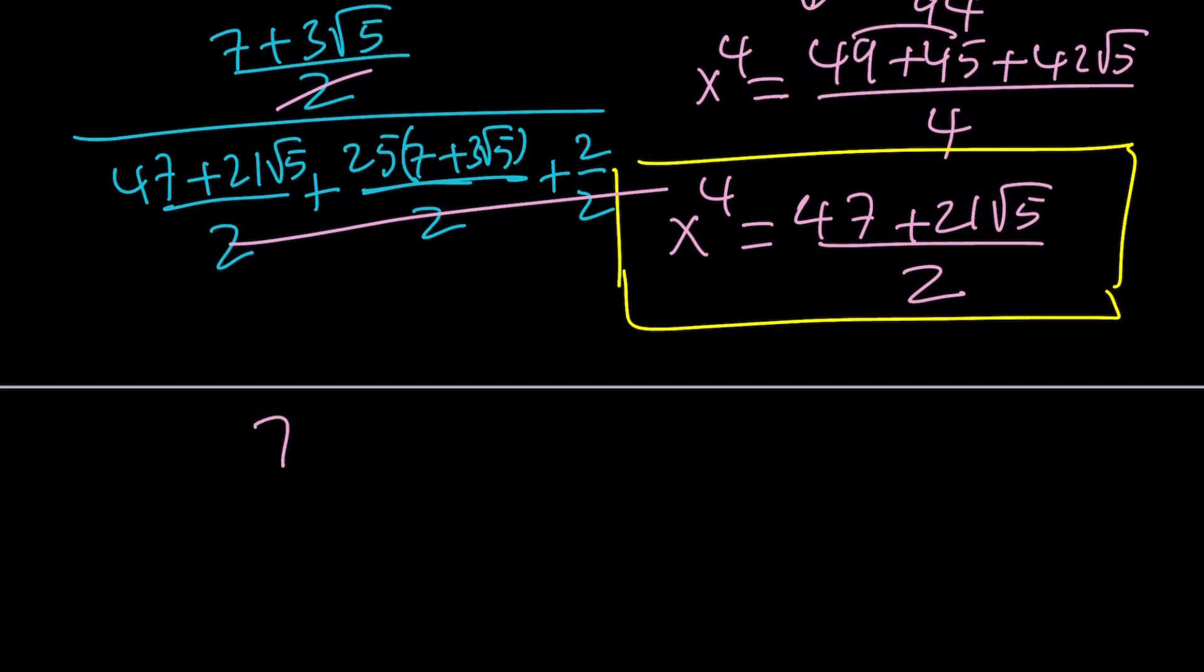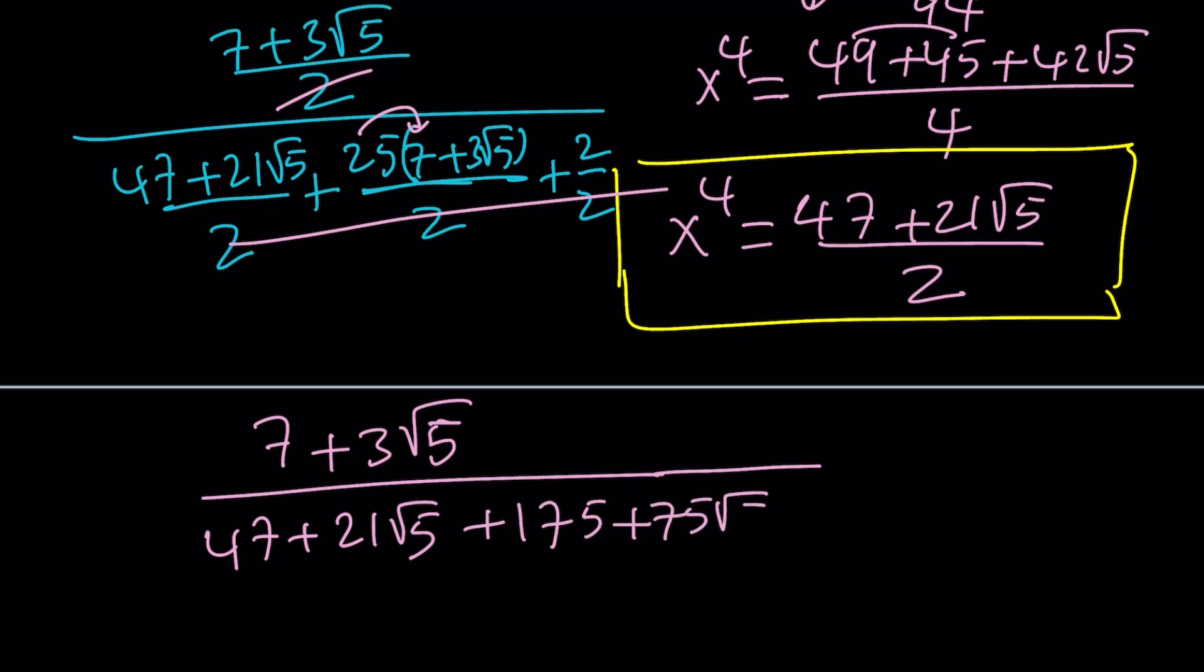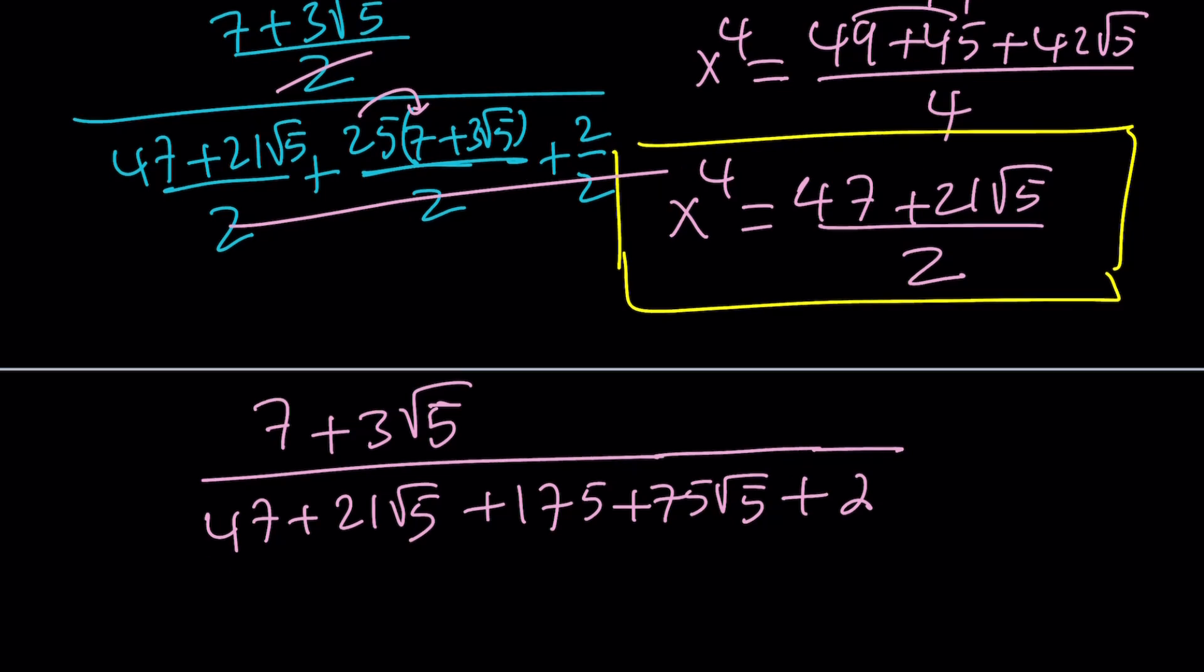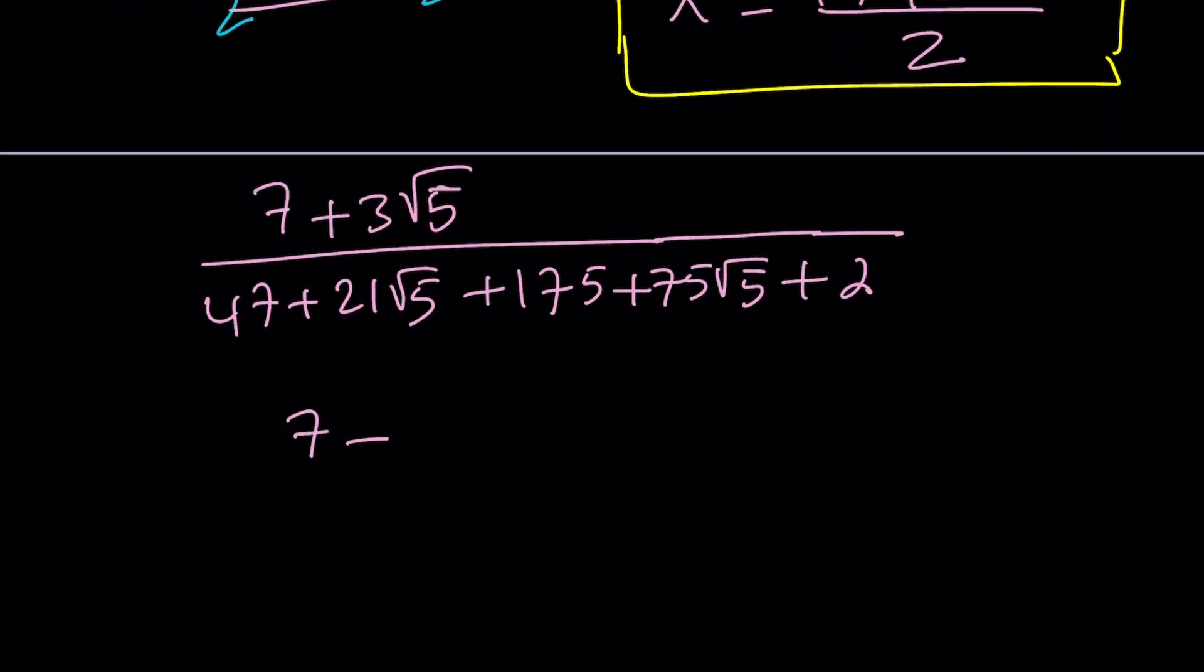That gives us the following: 7 plus 3 root 5 all over. Now at the bottom you're going to get 47 plus 21 root 5, plus if you distribute the 25 over this, 25 times 7 is going to give you 175 plus 75 root 5 plus 2.